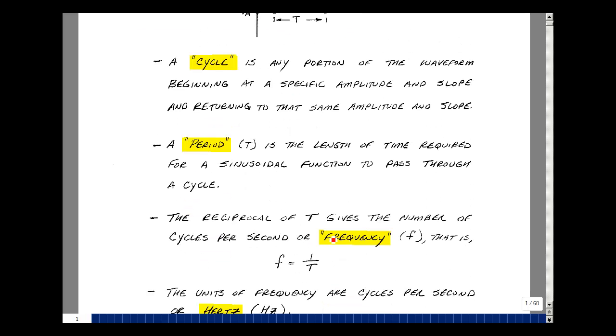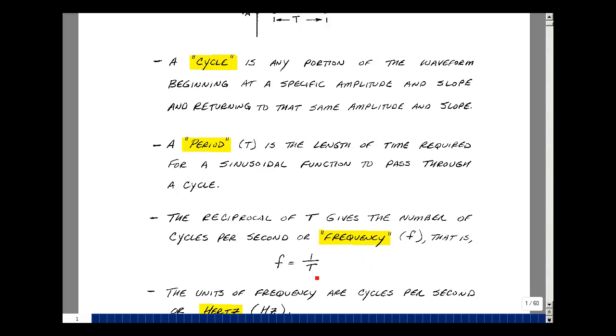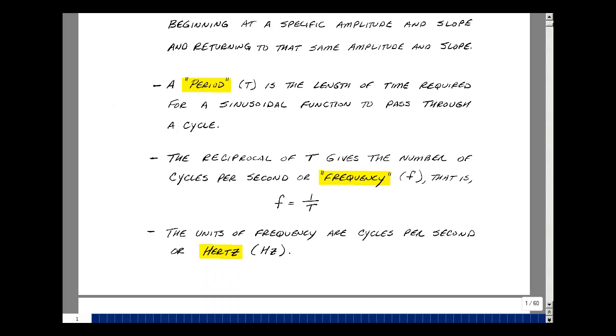The reciprocal of the period gives a number of cycles per second. We call this frequency, the symbol f, and has a value that's 1 over the period. The unit of frequency is cycles per second, but that was later renamed after Heinrich Hertz, a German physicist, in around 1960.